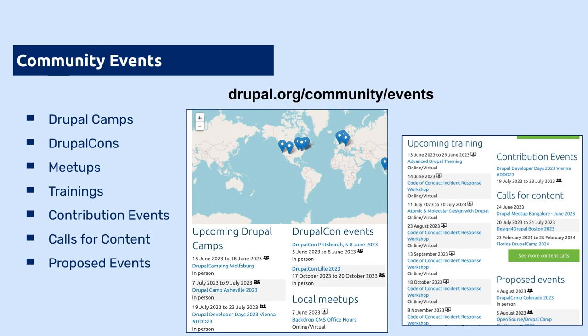On this events page we try to add information for all different types of events. A lot of people think events are only camps and DrupalCons, but any place community members get together is a community event — camps, meetups, trainings, contribution events, and calls for content. You can also put in proposed events, which is important so other organizers know when you're planning something. When they're planning their own event, they're not conflicting and going on the exact same date.